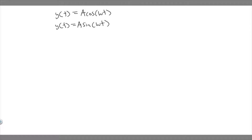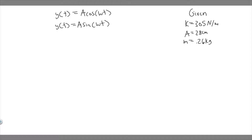Let's write down what we're given. The spring stiffness constant k equals 305 newton per meters. We're given an amplitude A, which equals 28 centimeters. And we're also given the mass, which is 0.26 kg. I'm going to convert 28 centimeters into meters because we want all units to be the same. So that's just 0.28 meters — you divide by 100.